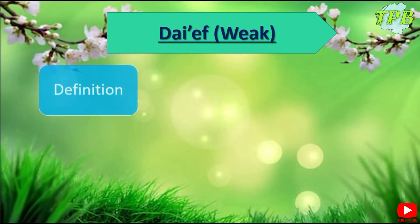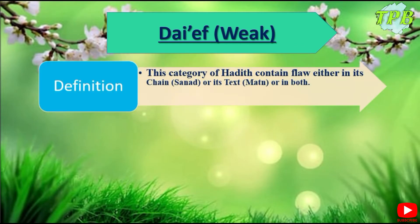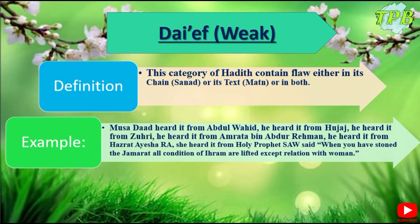Let's move to the next one: Daif, weak Hadith. This category of Hadith contains a flaw either in its chain, Sanad, or its text, Matan, or in both. The example is: Musaddad heard it from Abdul Wahid, Abdul Wahid heard it from Al-Hujaj, Al-Hujaj heard it from Zohri, Zohri heard it from Amrata bin Abdul Rahman, Amrata bin Abdul Rahman heard it from Hazrat Aisha.